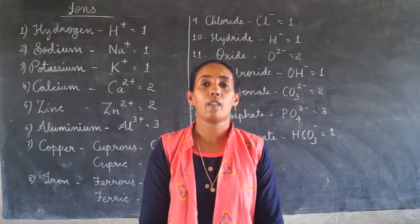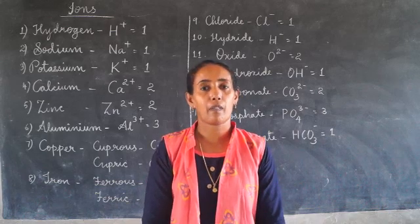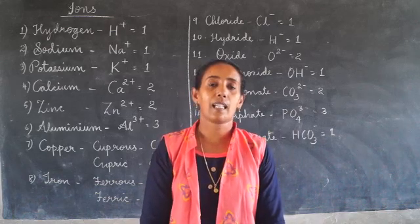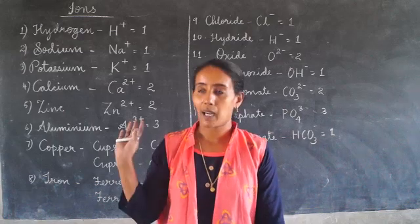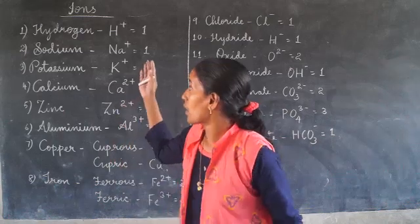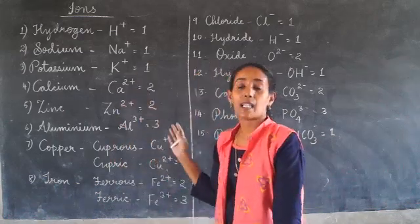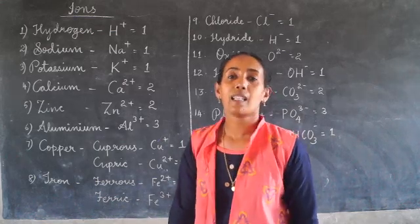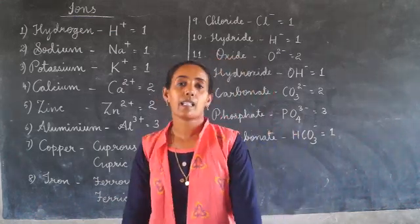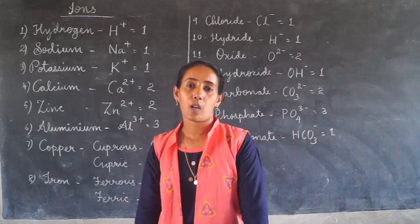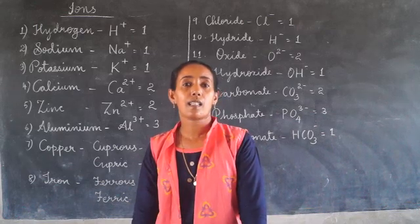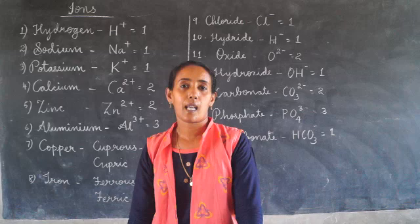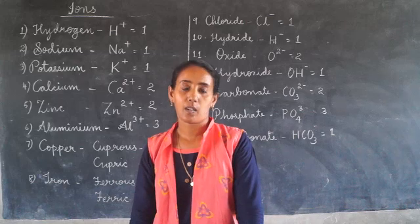How do we write the chemical formula of ionic compounds? Before writing the chemical formula, you should find out the ions and their valency. What is valency? Valency is the combining capacity of an element, or the number of electrons lost or gained to get a stable electronic configuration.